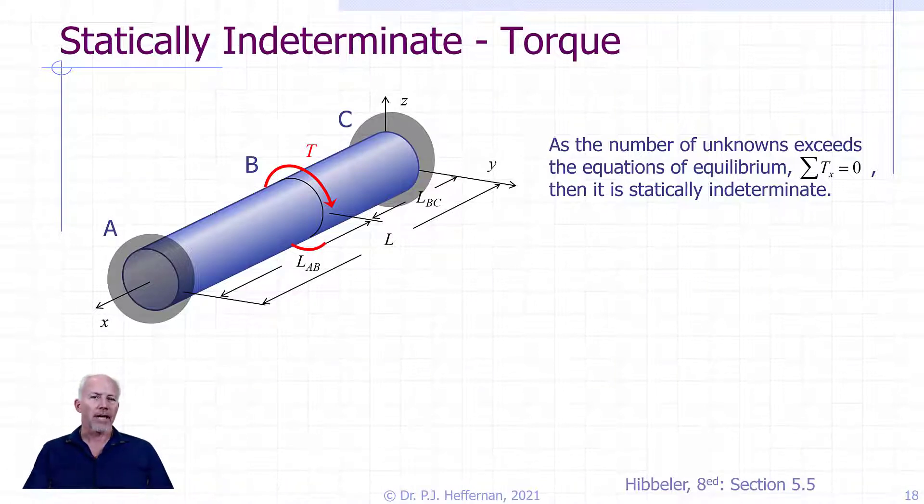If we look at this from a reactions perspective, we see that we have a reaction at A and a reaction at C, but we only have one equation of static equilibrium, which is the sum of the torques about the x-axis is equal to zero, and thus it is statically indeterminate.